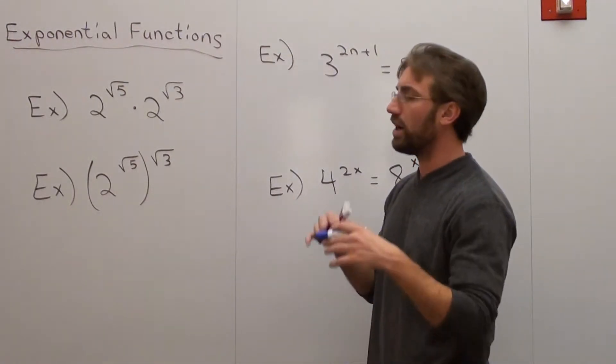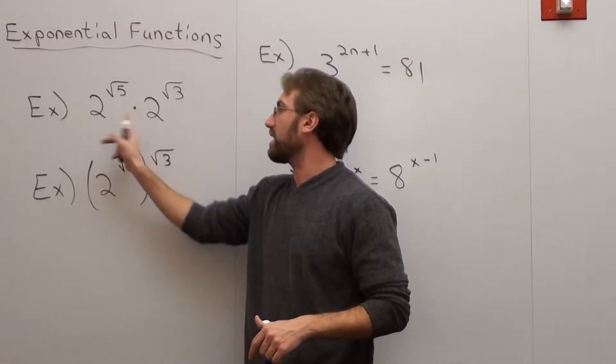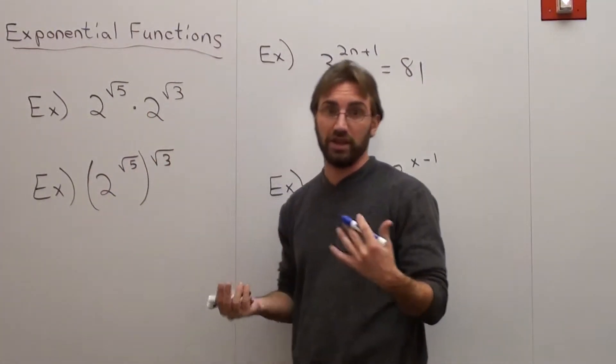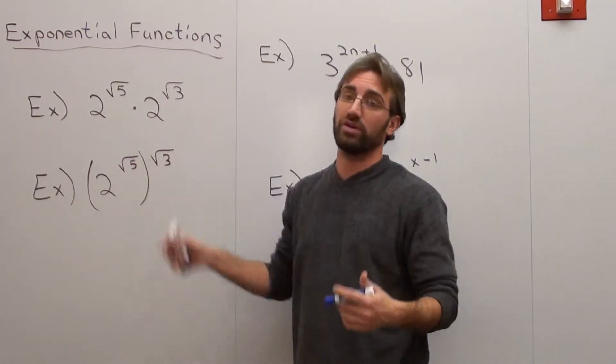So here we go. I've got a nice little review, although they're difficult problems now. When you see something like this where you have the same base and they're being multiplied, you add the exponents. So 2 to the power of square root of 5 times 2 to the power of square root of 3.